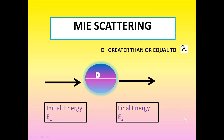Next is Mie scattering. Large particles in the atmosphere are able to scatter all wavelengths of white light. When all wavelengths of white light are scattered equally, Mie scattering is occurring. Mie scattering takes place when the diameter of the scatterer is similar to or larger than the wavelength of the incident light — that is, when d is equal to or greater than the wavelength of the incident light.